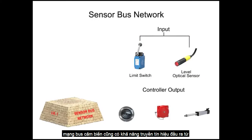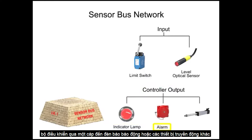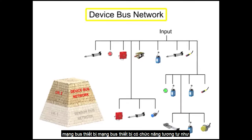The sensorbus network is also capable of transmitting output signals from the controller over one cable to indicator lamps, alarms, or other actuator devices. The next increasingly complex level of industrial fieldbus networking is the devicebus network.